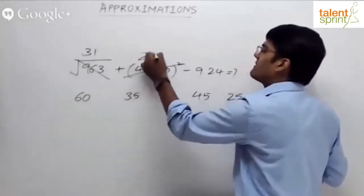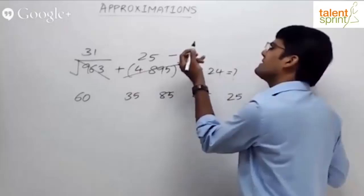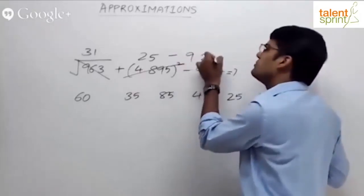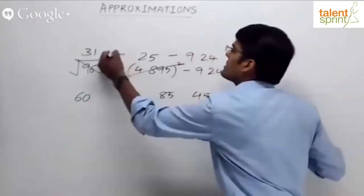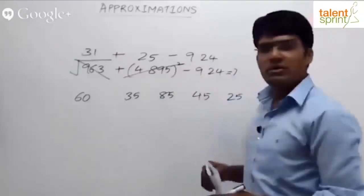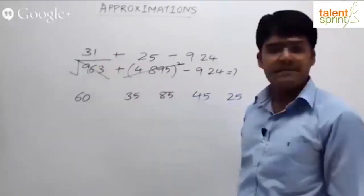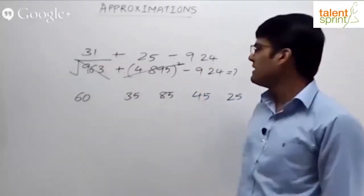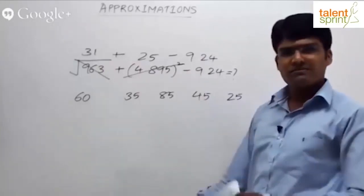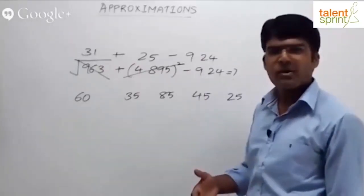9.24, let's say. So 31 plus 25 minus 9.24. Find out what is 31 plus 25: 56. 56 minus 9.24 is 46, 46 point something.